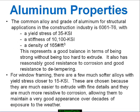The common alloy and grade of aluminum used for structural applications in the construction industry is 6061-T6. It has a yield stress of 35 ksi, a stiffness of 10,100 ksi, and a density of 165 pounds per cubic foot. You can get all kinds of different structural aluminum and fine-tune it, but generally speaking if you ask for a structural grade of aluminum, this is what you get.